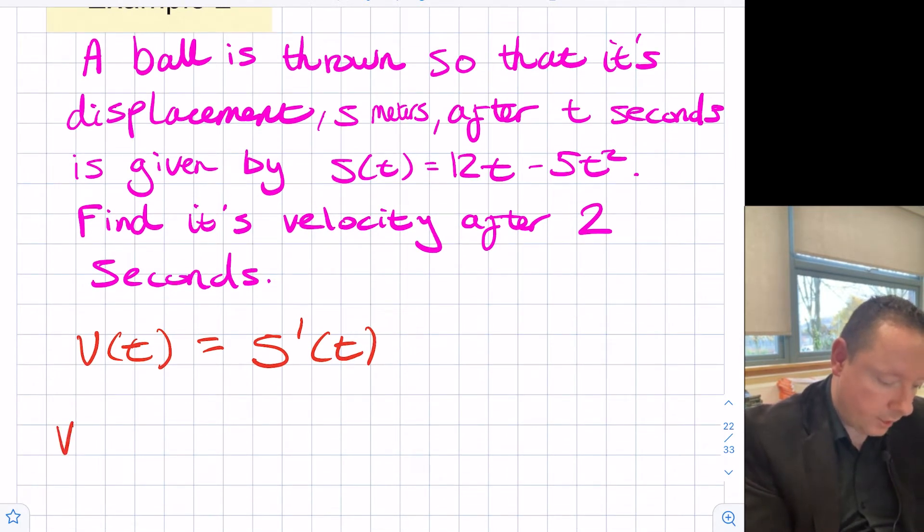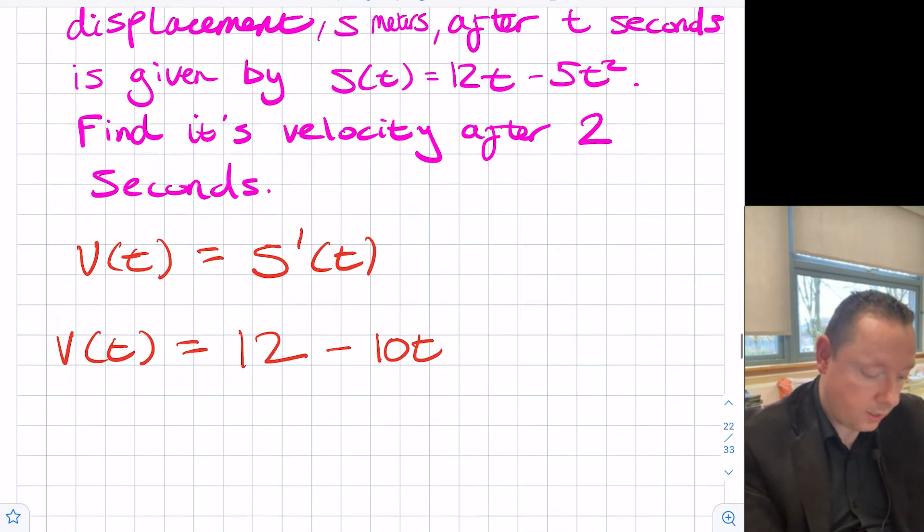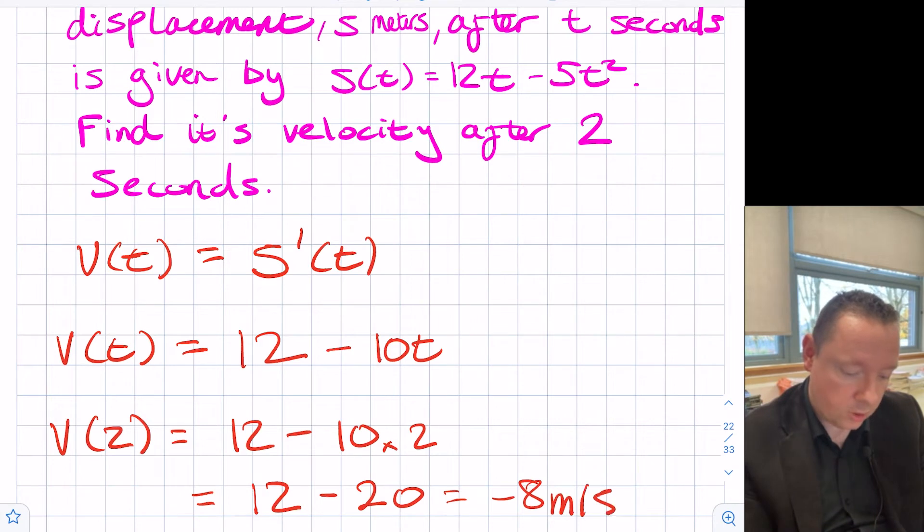So the velocity is just equal to, if I differentiate this function, 12 minus 10t. And we want it after two seconds, so we can substitute two into this. So v of 2 is equal to 12 minus 10 times 2. That's 12 minus 20, which is minus 8. And since we've been given units in our question, we give units in our answer. So that's meters per second.